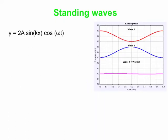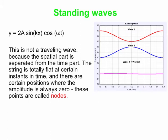So let's investigate this a little bit. The spatial part is completely separated from the time part. That means at certain instances in time, where cos(ωt) equals zero, then y equals zero for every point along the string. In addition, there are certain x values where sin(kx) equals zero — so at those x values, the wave is always zero; the amplitude of the wave is always zero. Those points are called nodes. And the really big amplitude points are called antinodes.